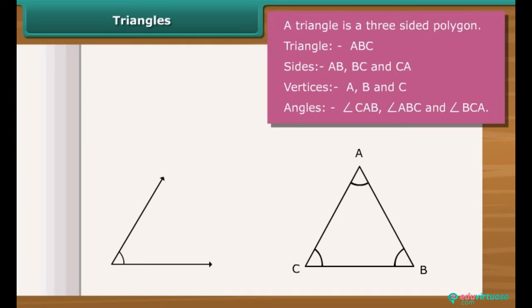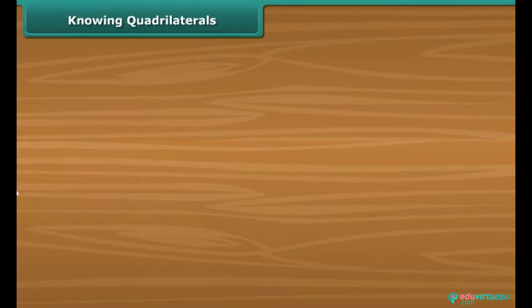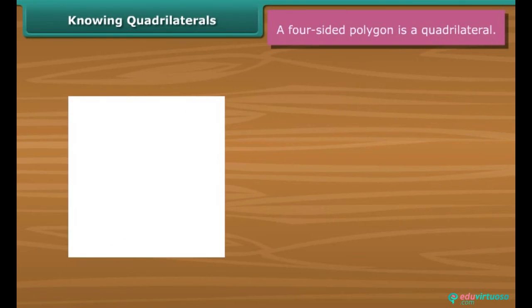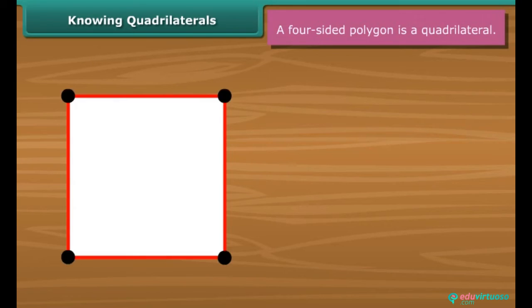Three angles are angles CAB, ABC and BCA. The page of a book is called a quadrilateral. It has four sides, four vertices and four angles.